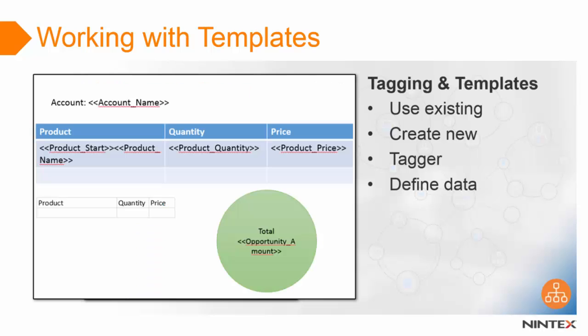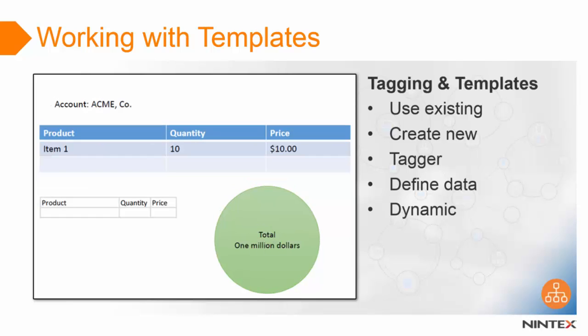When selecting to edit the template, the document will automatically open displaying the document generation tagger. Using this tool you can add tags and define where the action should insert the data into your document. The data comes from SharePoint or any database you connect to the workflow. At runtime the workflow dynamically assembles the output document from the data sources in the workflow.